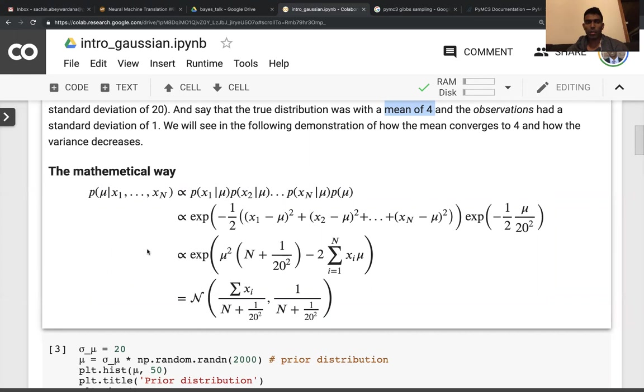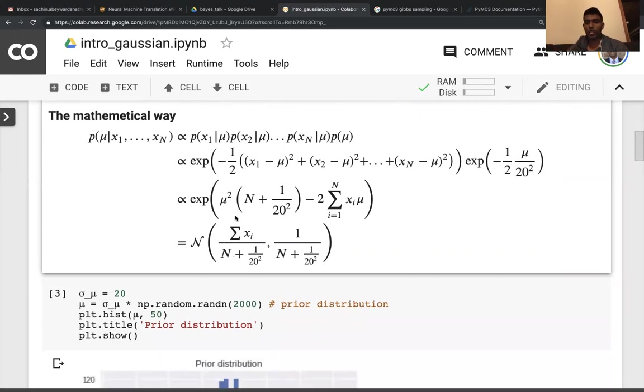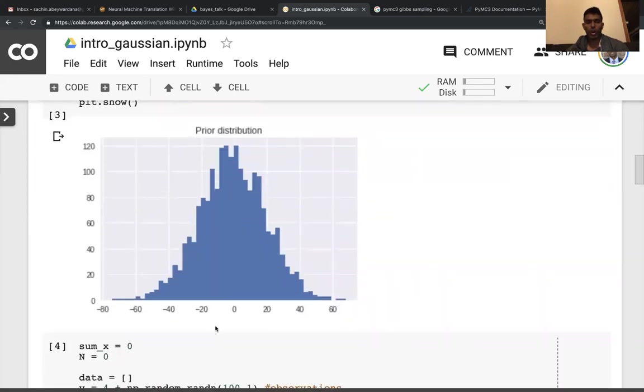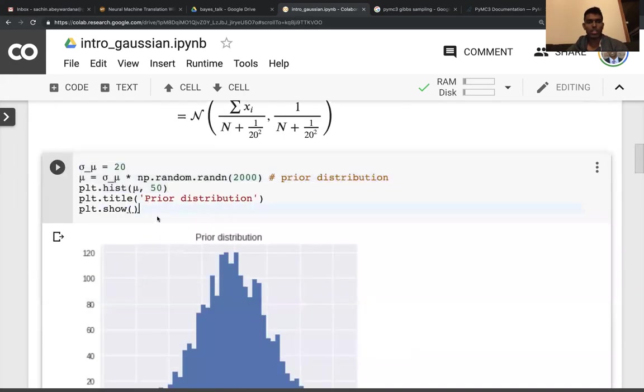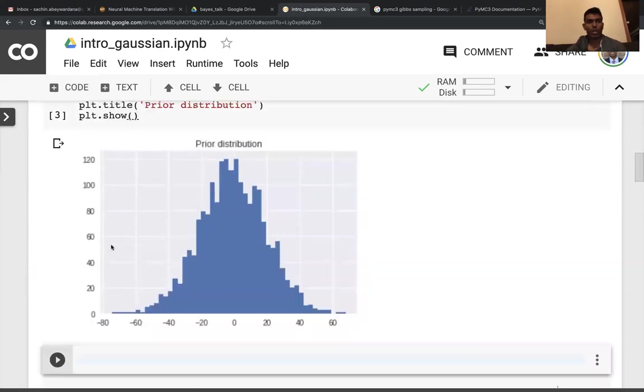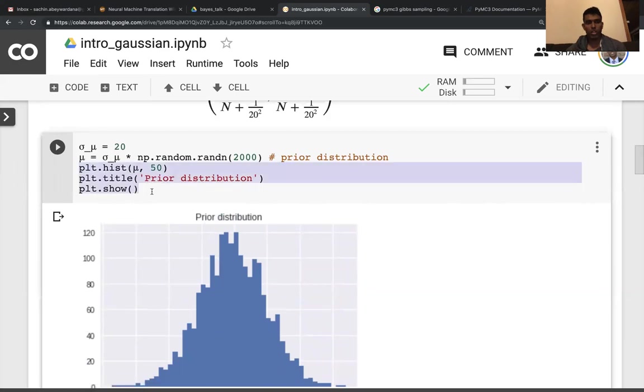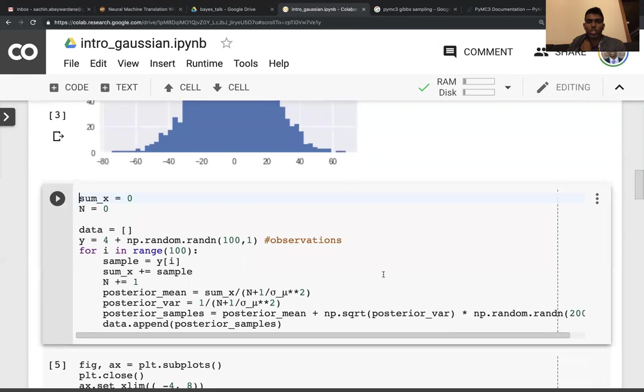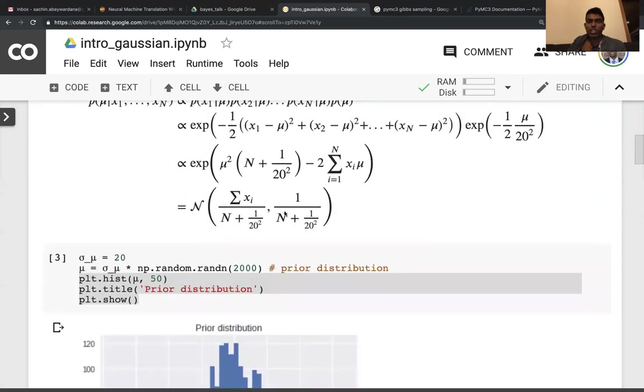The true mean is four, but we haven't observed that. You can work through the maths and end up saying that the posterior is this thing. You don't have to go through this. I promise you this is quite right. But one thing important to note is see over here, how it goes sum of x divided by n. That's the usual estimate that you get. But the mean has this extra component plus one on 20 squared. It's quite a small value, but that comes thanks to this value over here. There's a variance component over here as well. When we look at the prior distribution, it's quite a wide distribution.